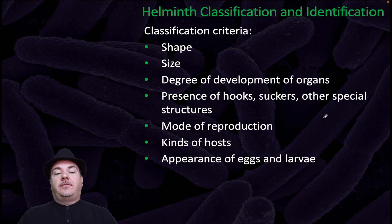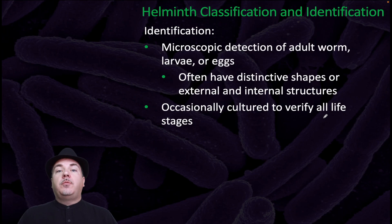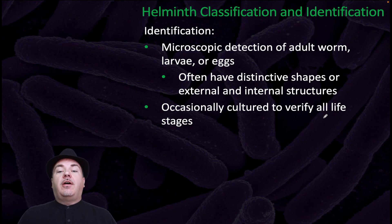How do we classify and identify the Helminths? We can classify them based upon their shape, size, degree of development of organs, presence of hooks, suckers, or other special structures, mode of reproduction, the kind of host they infect, and the appearance of eggs or larva. We identify them through microscopic detection of the adult worm, larva, or eggs, because they often have distinctive shapes or external or internal structures. They are occasionally cultured to verify all the life stages.